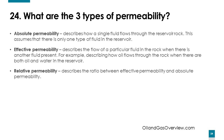What are the three types of permeability? Absolute permeability describes how a single fluid flows through reservoir rock, assuming there is only one type of fluid in the reservoir. Effective permeability describes the flow of a particular fluid through rock when another fluid is also present — for example, how oil flows when there are both oil and water in the reservoir. Relative permeability describes the ratio between effective permeability and absolute permeability.